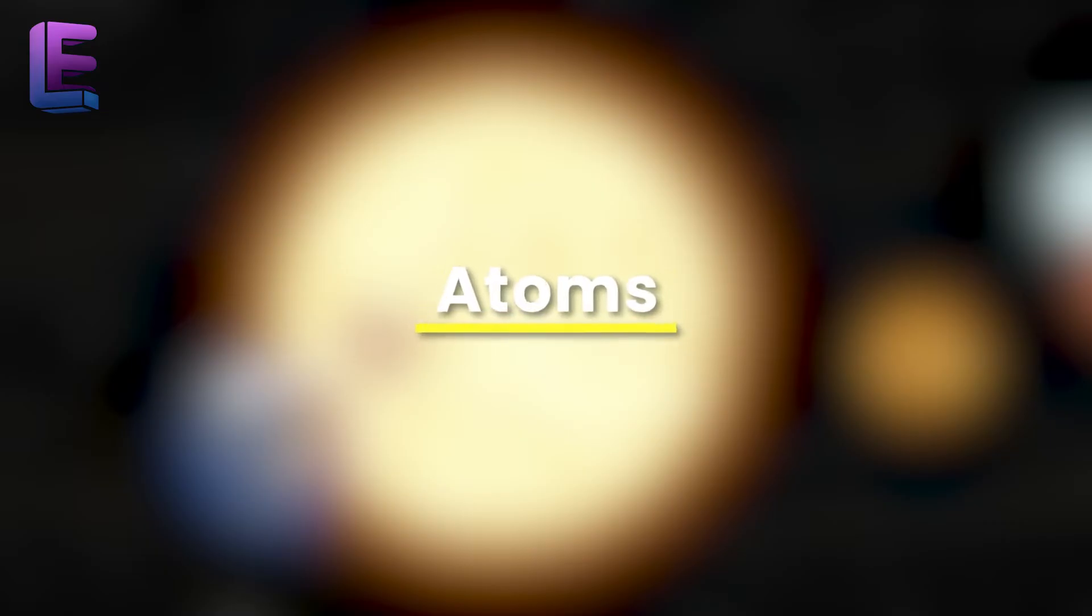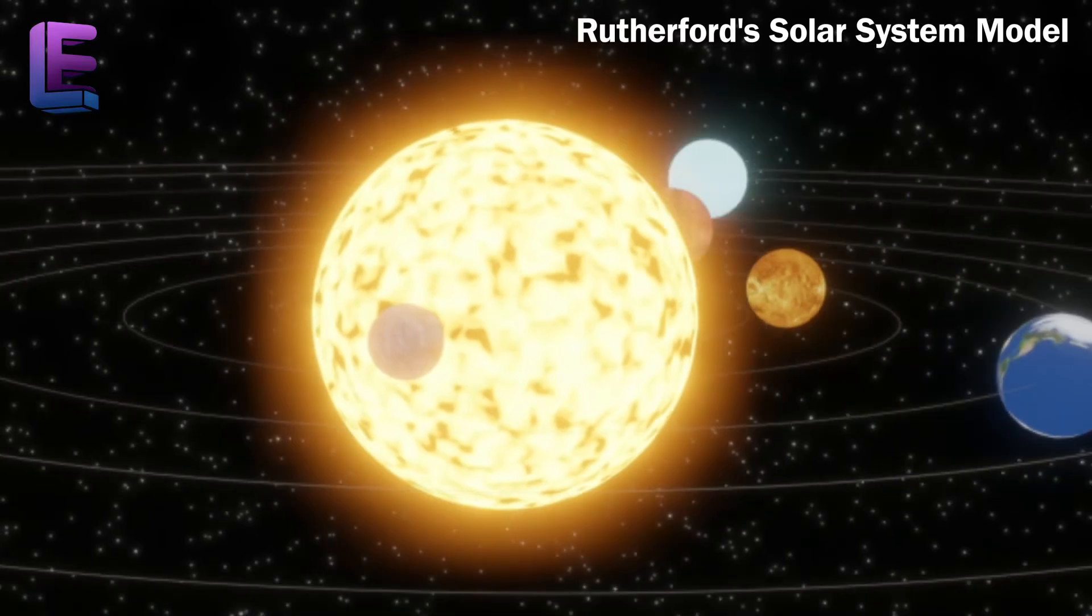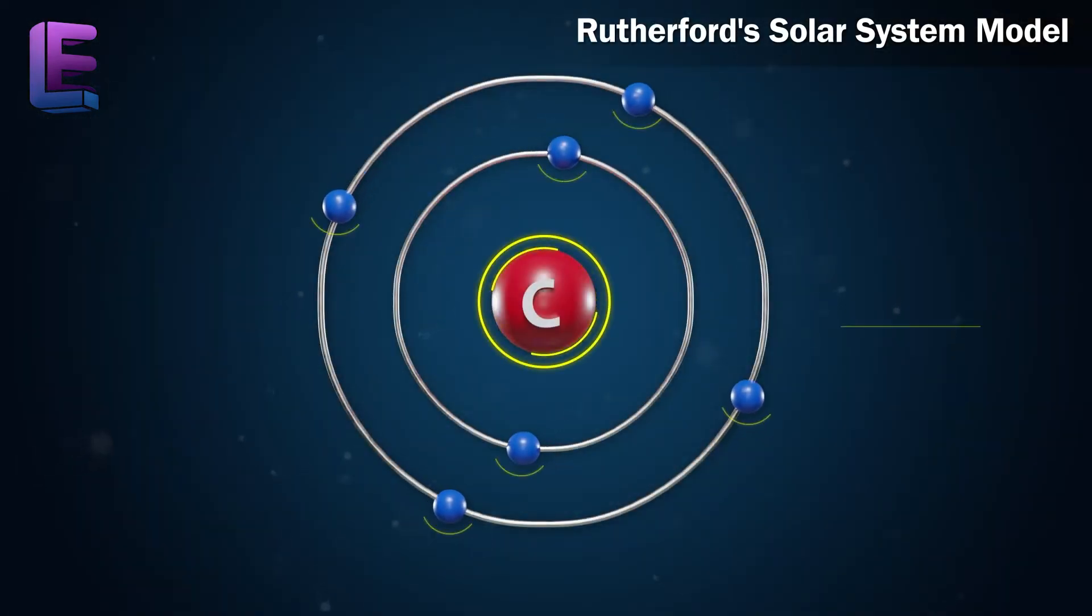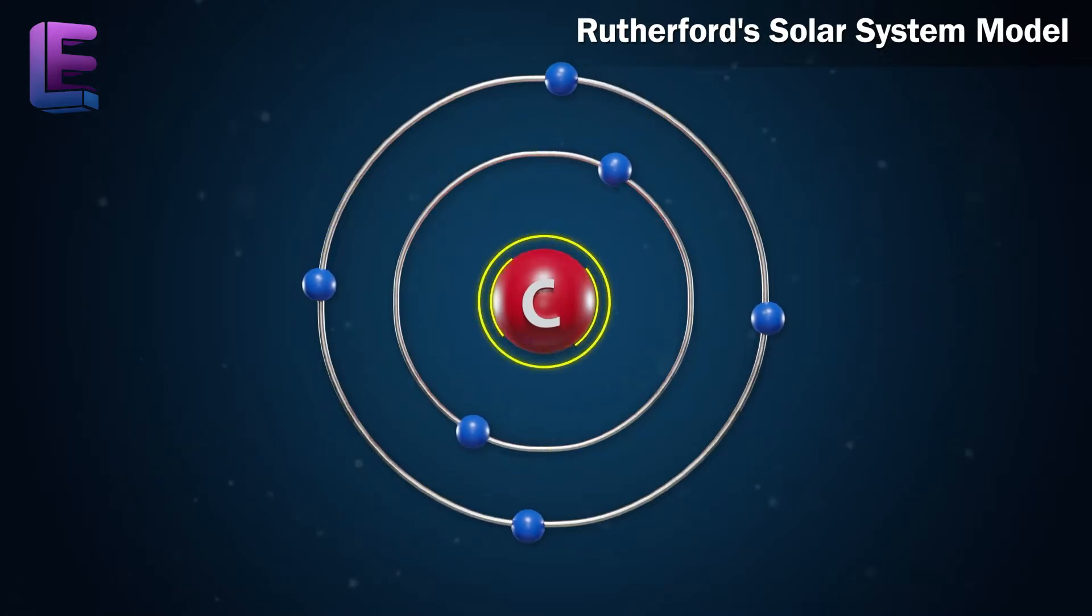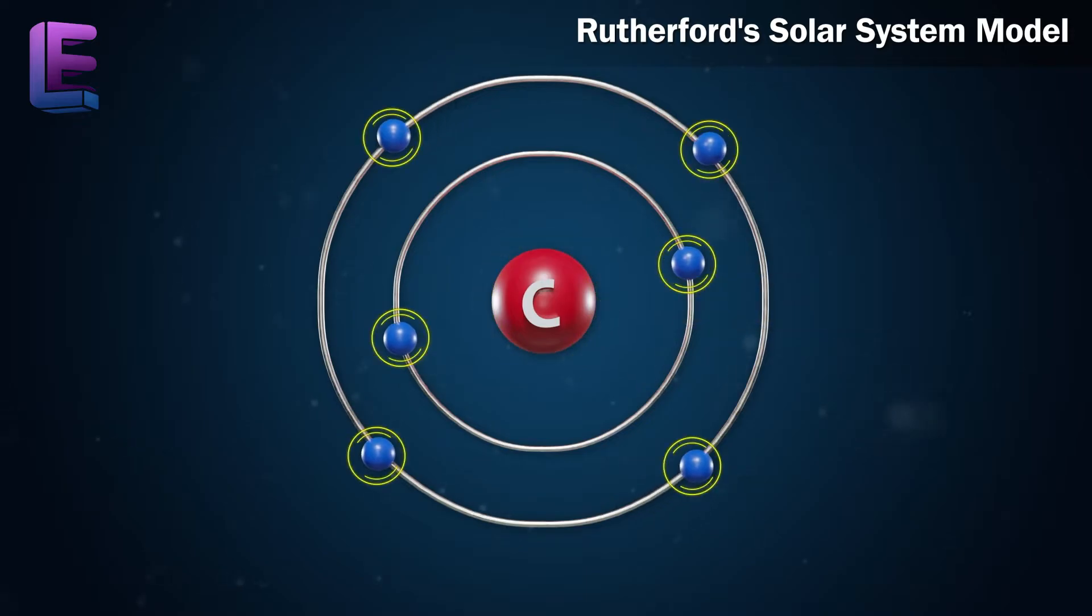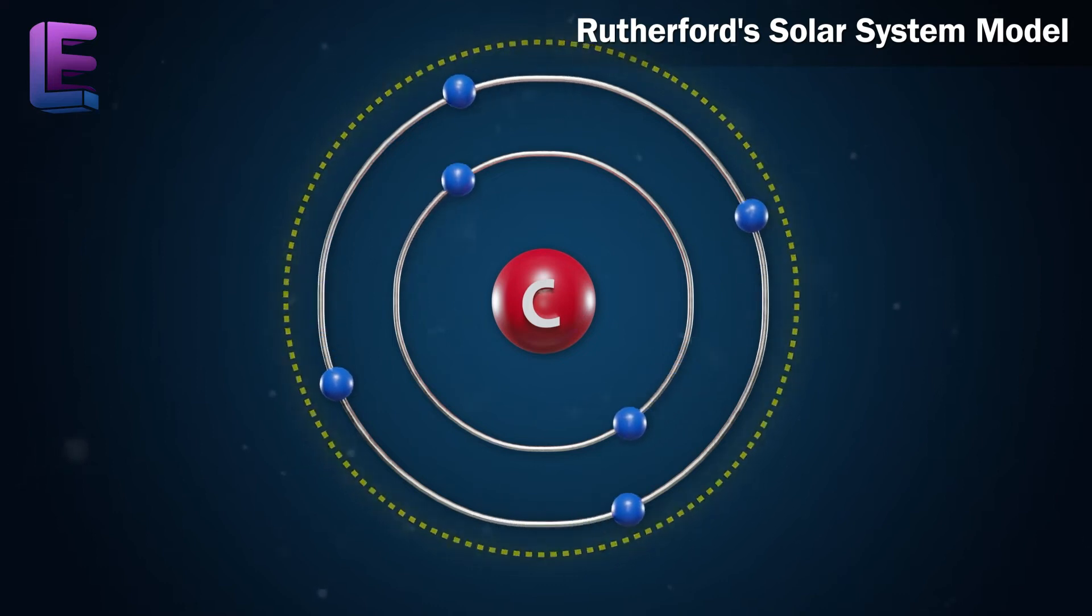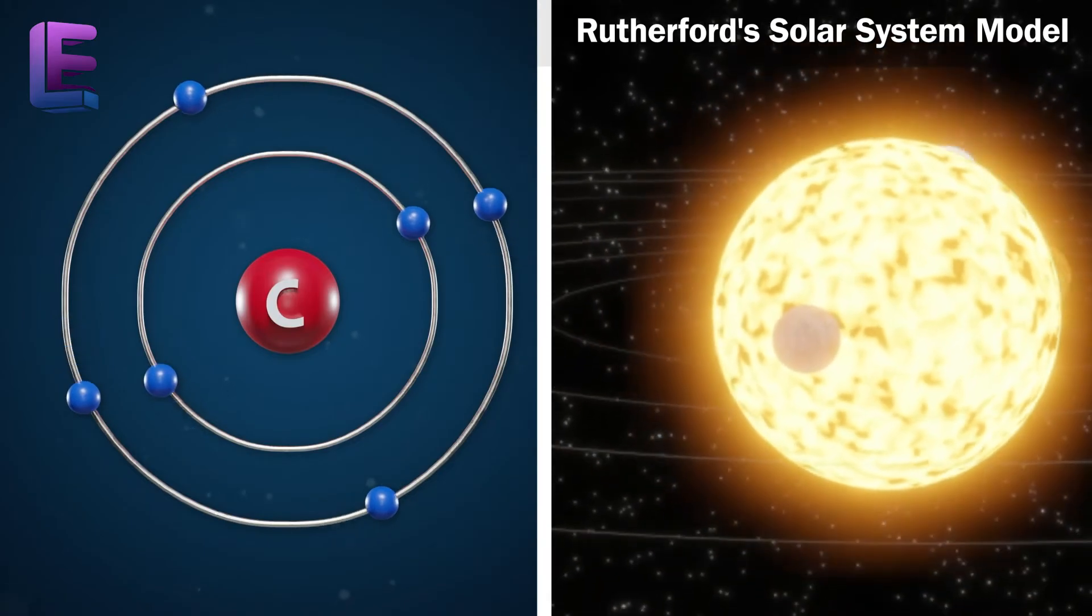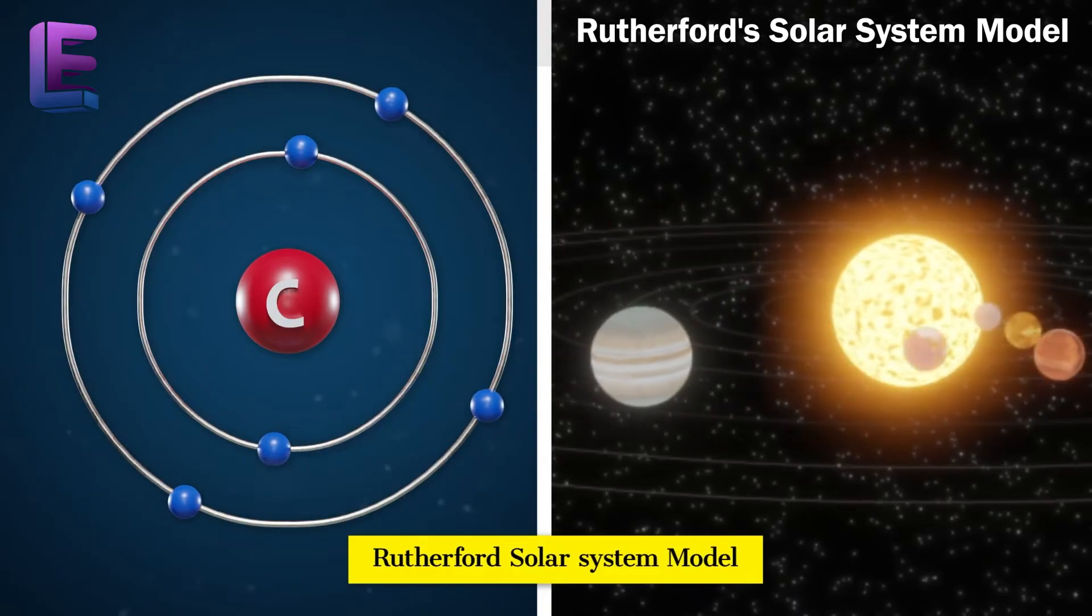Atoms. Rutherford's Solar System Model. In the same way planets revolve around the sun, electrons revolve around nuclei in an atom. This nucleus contains a positive charge while the electrons contain a negative charge. As a result, the atom is stable. As the revolution of electrons around the nucleus is compared to the revolution of planets around the sun, the model is called Rutherford's Solar System Model.